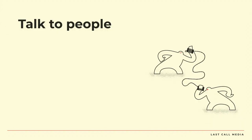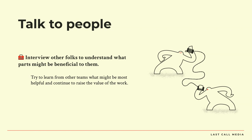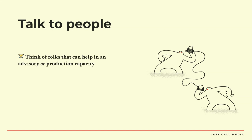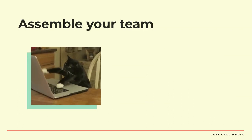So who? Talk to people. Interview other folks on your team and try to understand what parts might be beneficial to them. Do a little internal research — try to learn what will be helpful, which continues to raise the value of the work throughout the organization. Think of folks that can help in an advisory or production capacity — not just other designers building components, but developers, client-side collaborators, collaborative vendors. Accessibility experts are super helpful both in planning and when you're doing QA on these components. Content designers or site authors are super familiar with inputting content and the actual pain points of working with the site. So it's time to assemble your team.